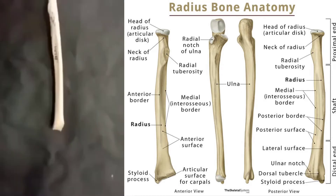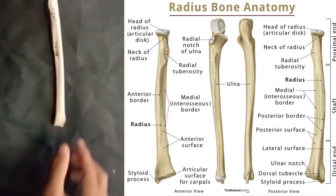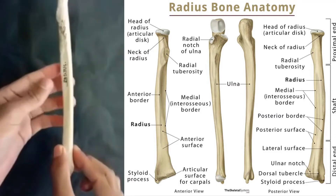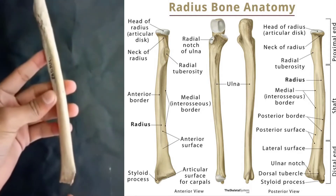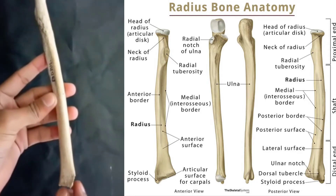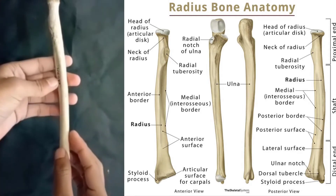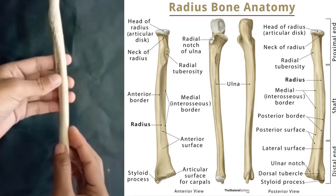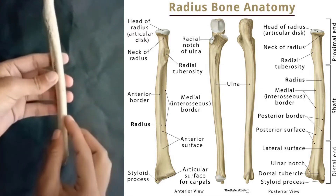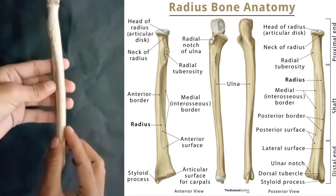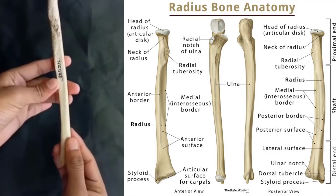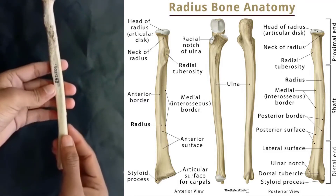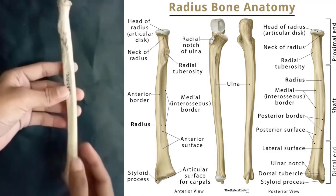Now we will discuss its functions. Its main functions are to articulate with the ulna and humerus at the elbow, to provide supination and pronation — meaning the up or down orientation of your hand, arm, or foot — and to articulate with the lunate and scaphoid to provide all the movements of the wrist.